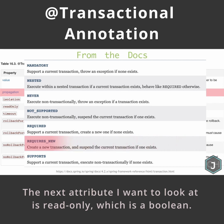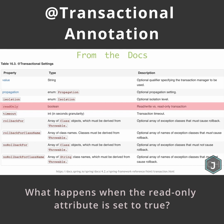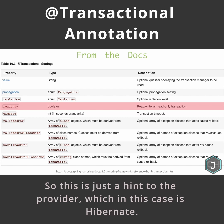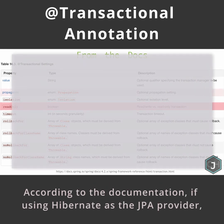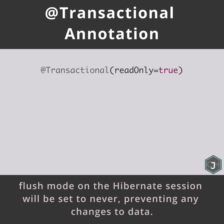The next attribute I want to look at is read-only, which is a boolean. What happens when the read-only attribute is set to true? The default is false, by the way. Spring doesn't handle persistence, so it cannot define exactly what read-only should do. So this is just a hint to the provider, which in this case is Hibernate. According to the documentation, if using Hibernate as the JPA provider, when the read-only flag is set to true, flush mode on the Hibernate session will be set to never, preventing any changes to data.